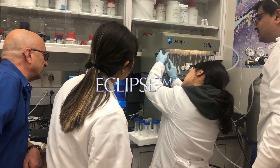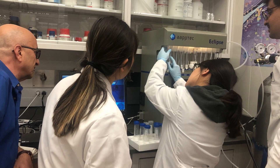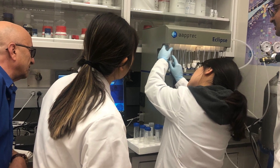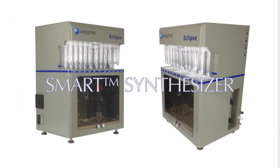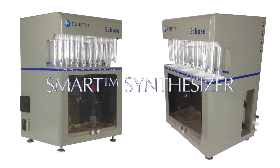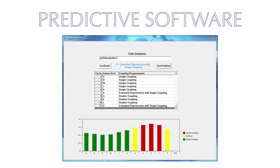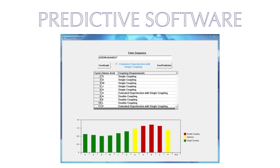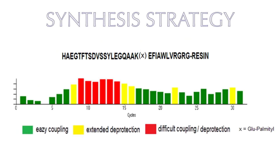Another best-selling AAPPTec peptide synthesizer is the Eclipse, a personal peptide synthesizer for research that automatically generates a protocol for a given sequence. Eclipse is a smart peptide synthesizer, providing the expert and novice peptide chemist with software that analyzes any sequence, no matter how difficult the deprotection and coupling. The Eclipse smart software presents the user with a synthesis strategy in written and graphic display, which provides a protocol for each step of the process.